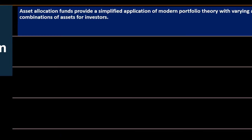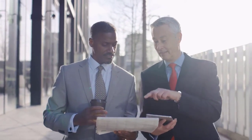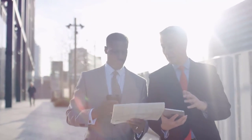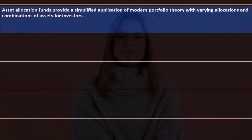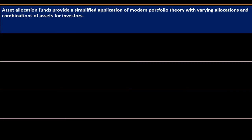Types of asset allocation funds: these funds provide a simplified application of modern portfolio theory with varying allocations and combinations of assets. For someone investing for retirement, the challenge is diversifying across asset classes, considering goals and time horizon, and adjusting allocation as you get closer to your goal. One simplified method is to just pick a fund that does that reallocation for you, though there are arguments about whether this outperforms active management.